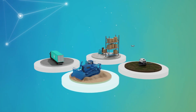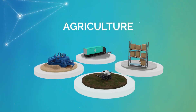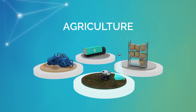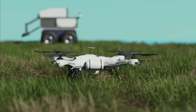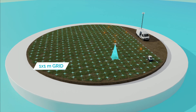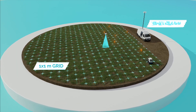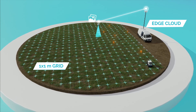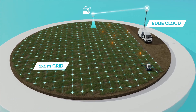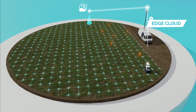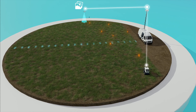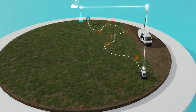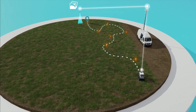Open 5G campus networks are a promising technology for agriculture use cases. An autonomous system is used to control weeds. For this purpose, an unmanned aerial vehicle (UAV) flies over the field to detect plants. The UAV sends images over the 5G network to the edge cloud where they are analysed, the plants detected and their location calculated.